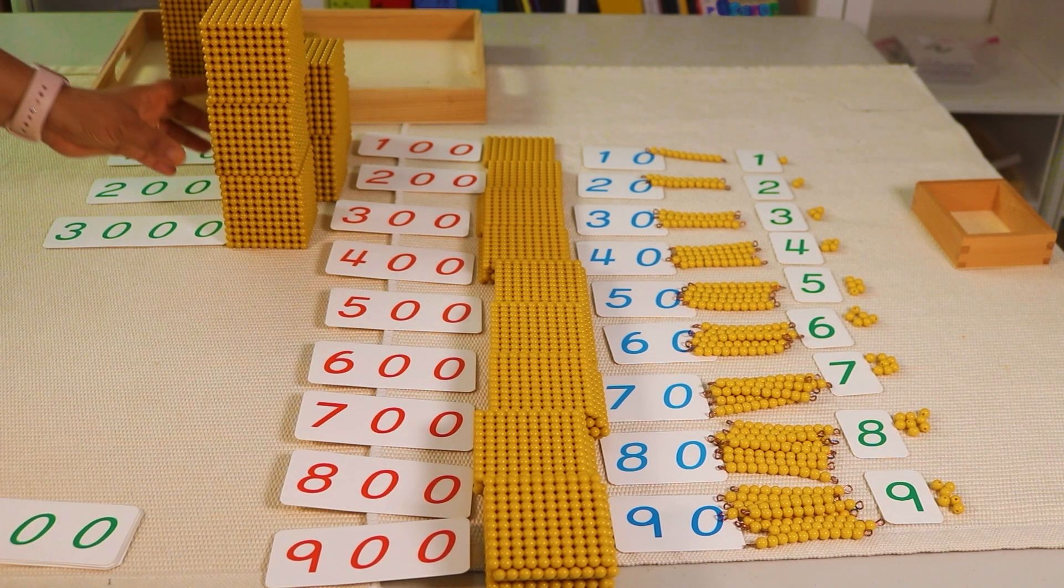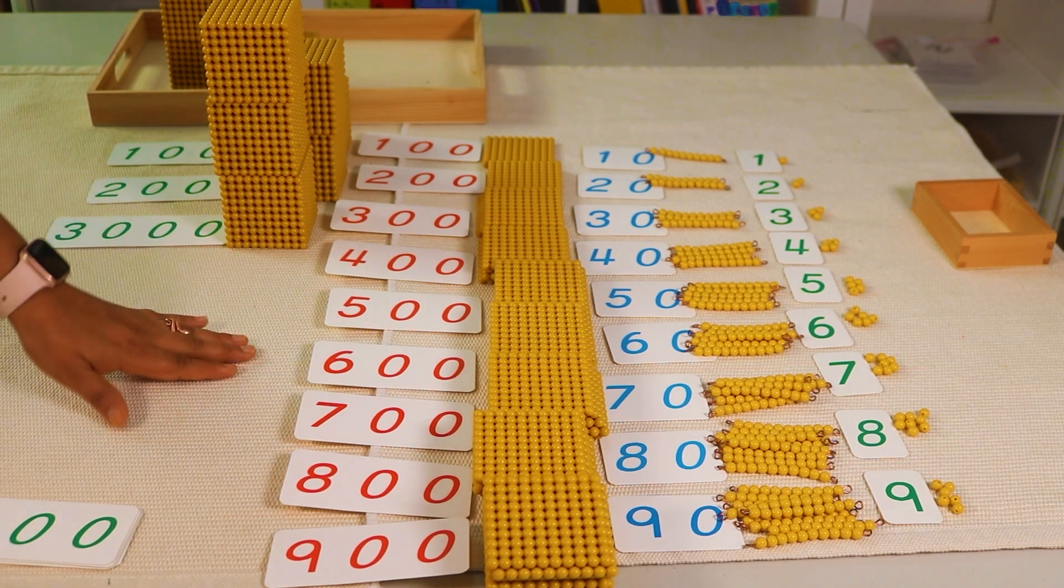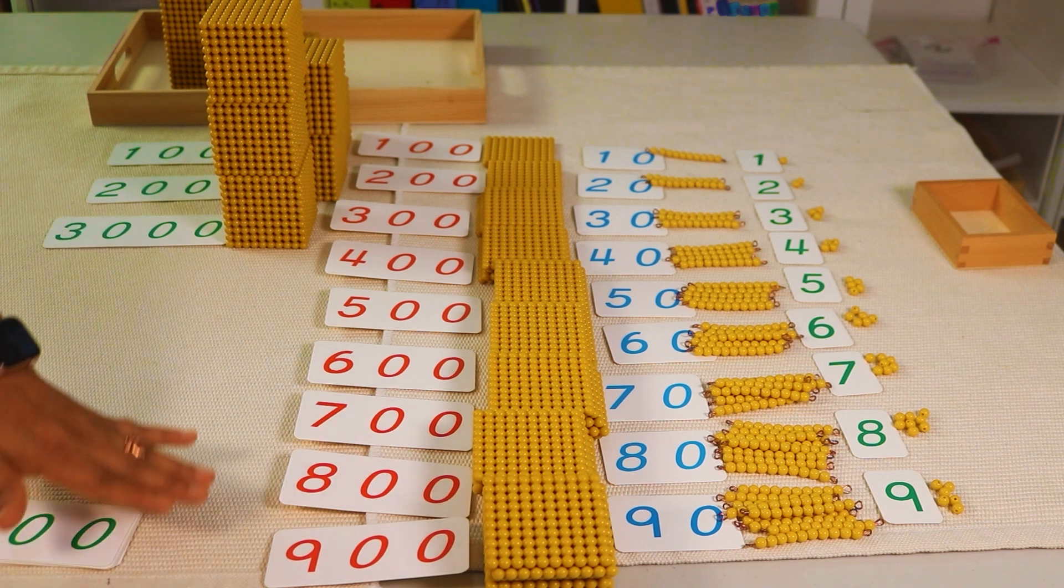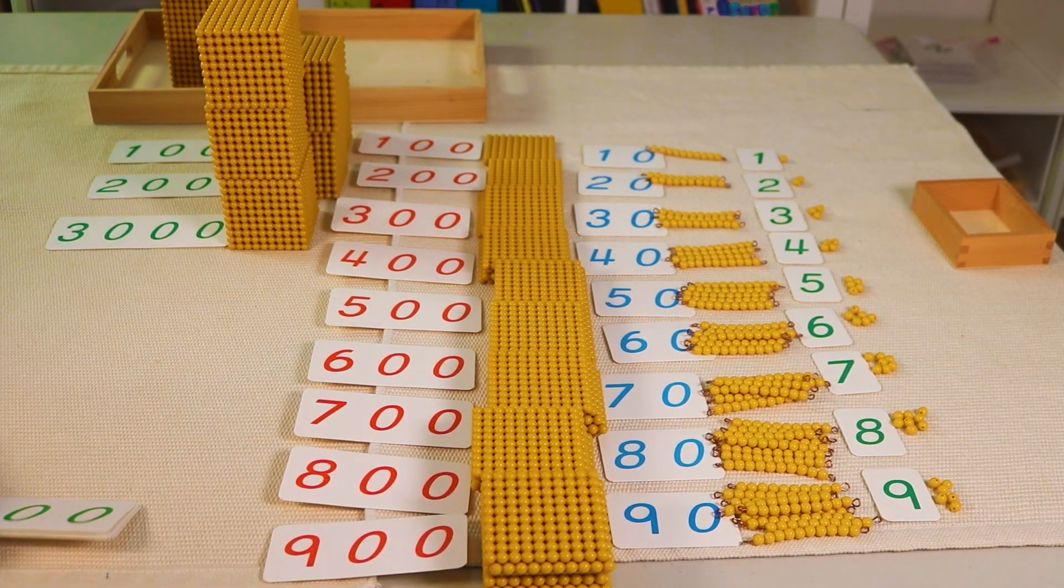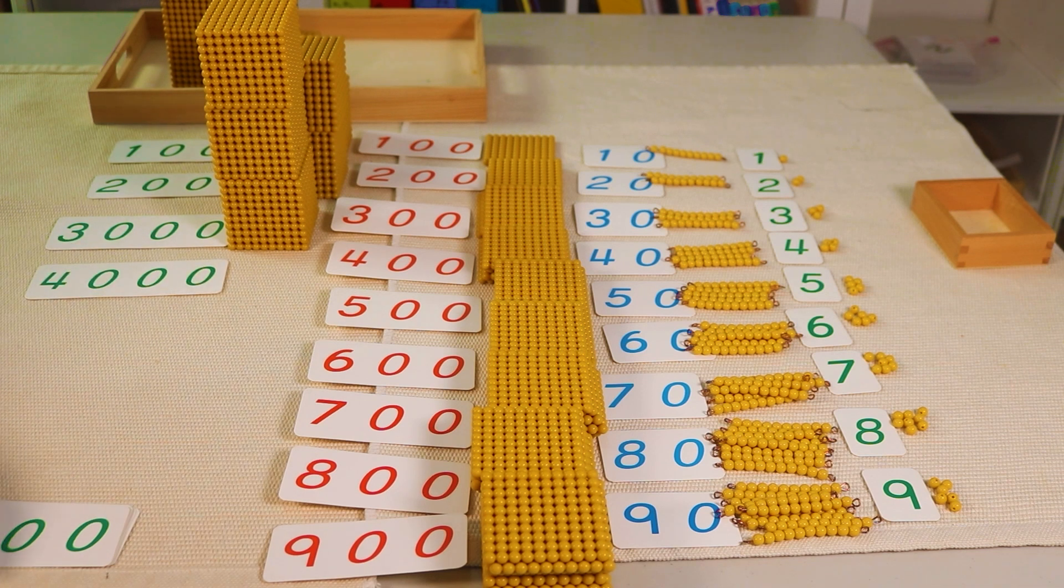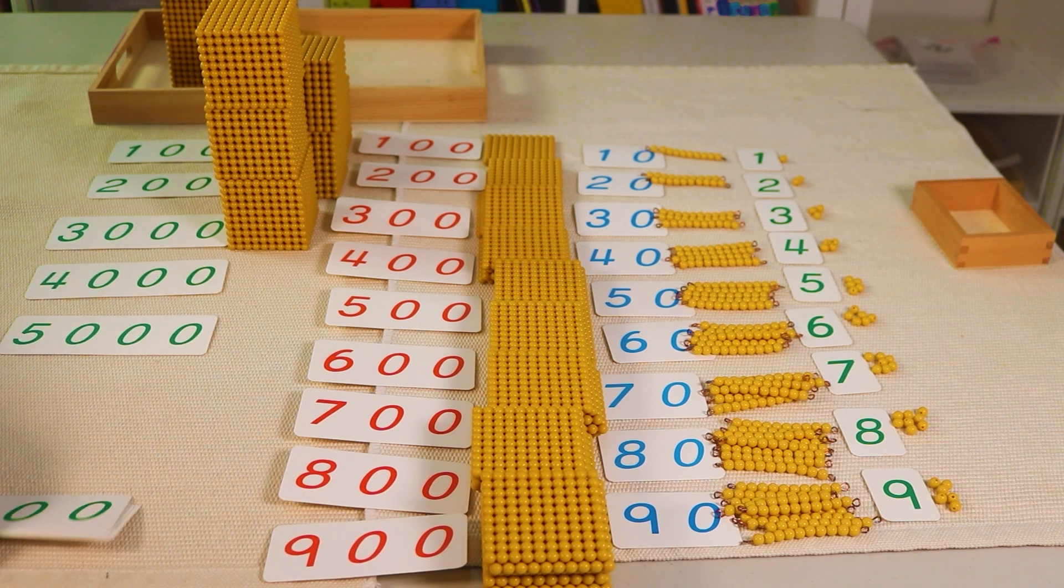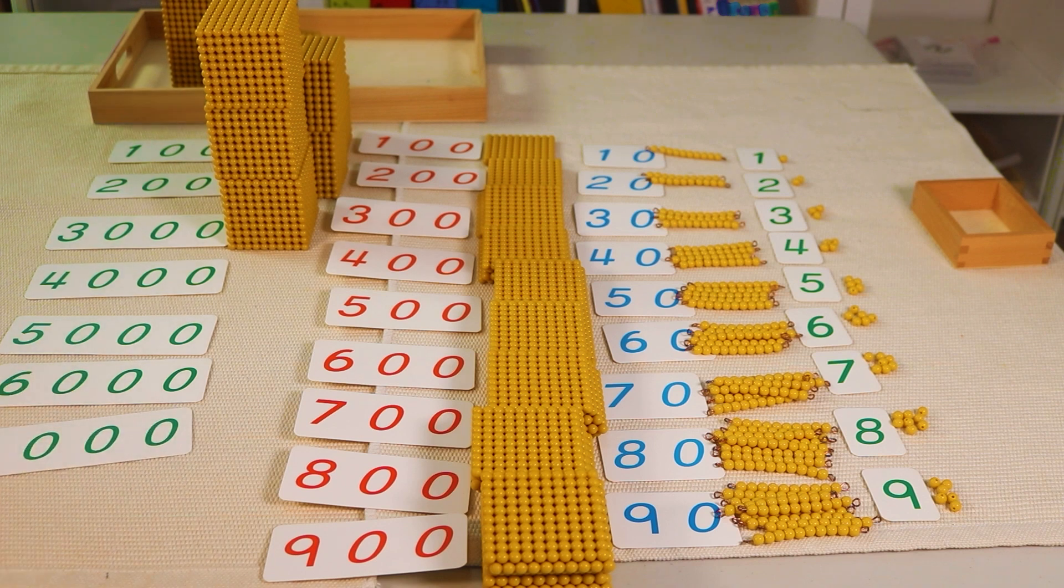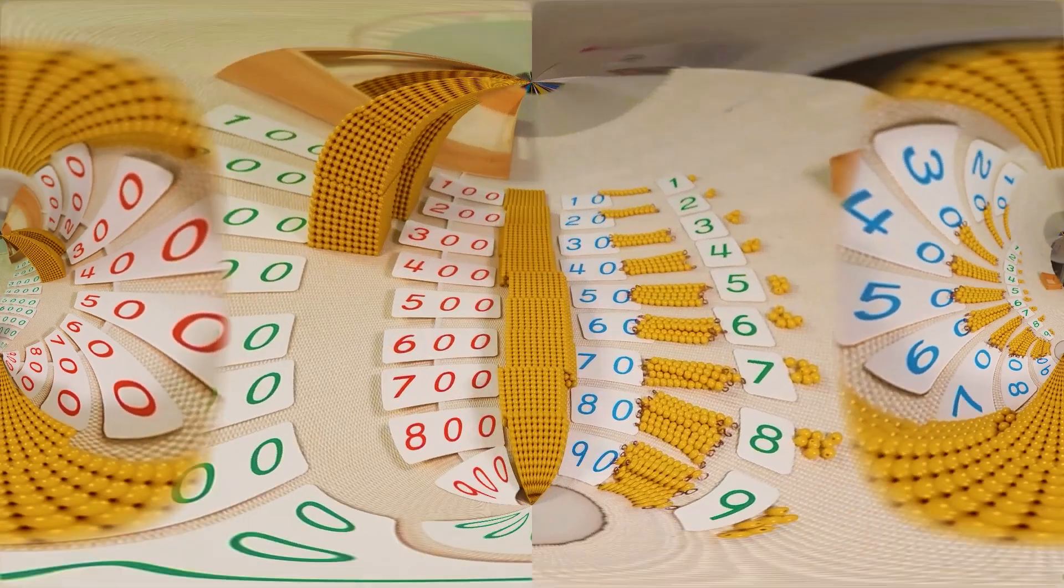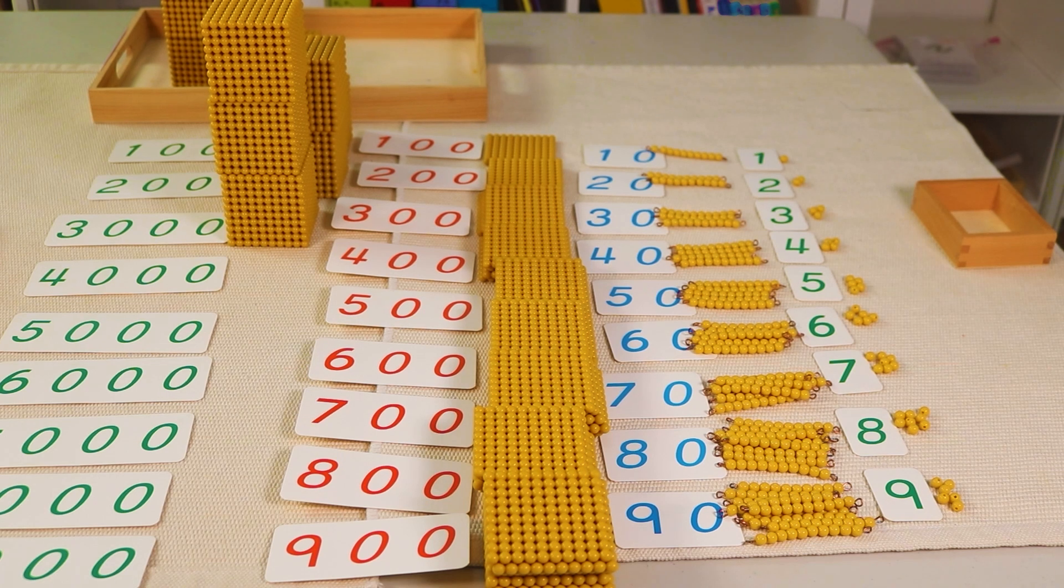You can show them how you can arrange until nine thousand. So I'm just going to show you the symbols. Four thousand, five thousand, six thousand, seven thousand, eight thousand, and then nine thousand.